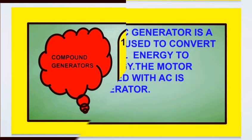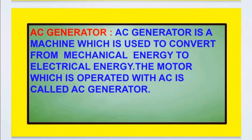Next we will see AC generator. What is an AC generator? An AC generator is a machine which is used to convert mechanical energy into electrical energy. The generator which is operated with AC is called an AC generator.